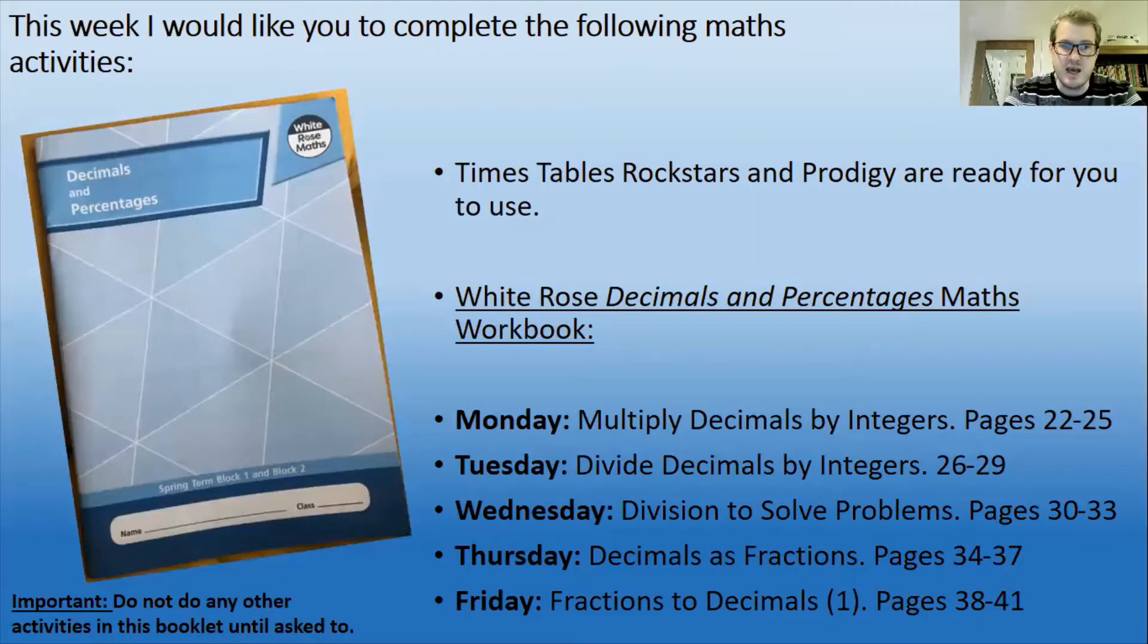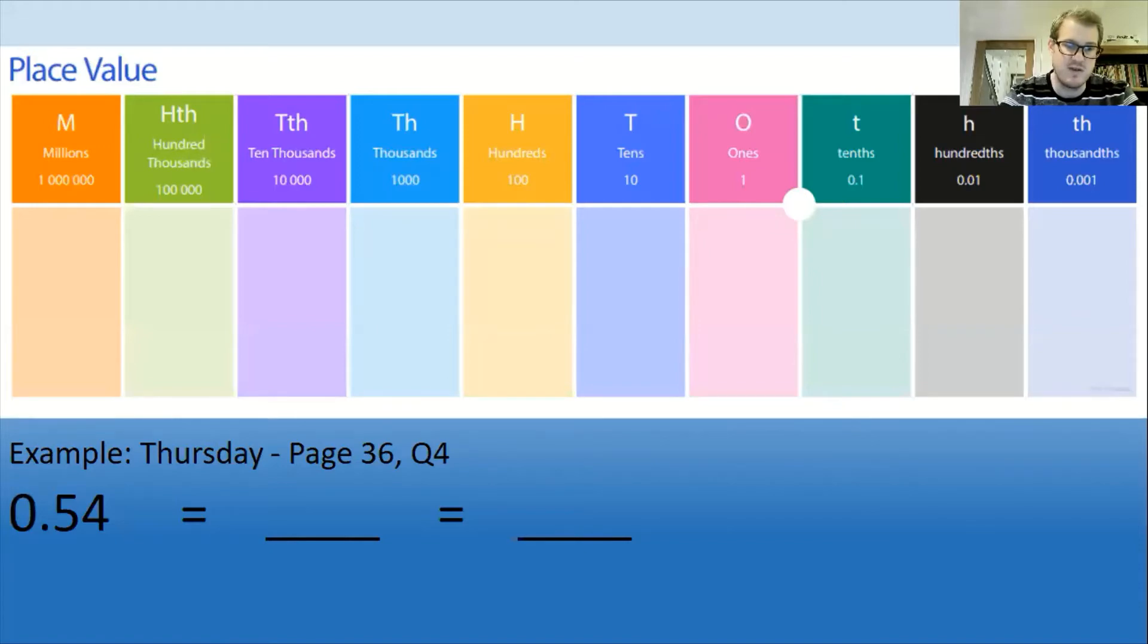Right, the booklet is decimals and percentages this week. You've got your page numbers on the boards now. These get a little bit difficult by the time you get to Thursday and Friday. We'll be using formal written methods to multiply and divide. So push stop method for your division. We won't be using long division because we'll do that when we return. So you can use short division for that push stop. When we get to Thursday and Friday, there's a question on page 36 on Thursday which I just want to go over with you on the board now.